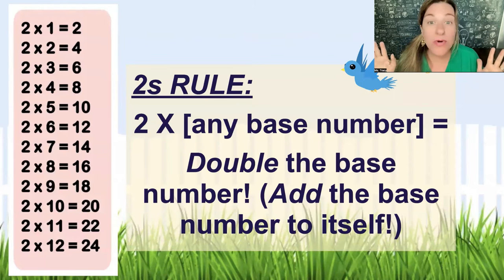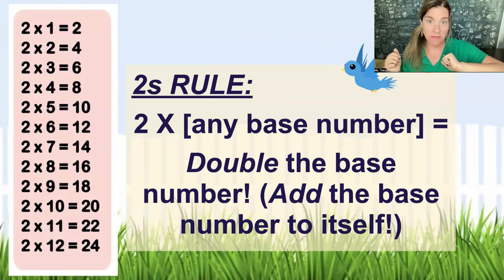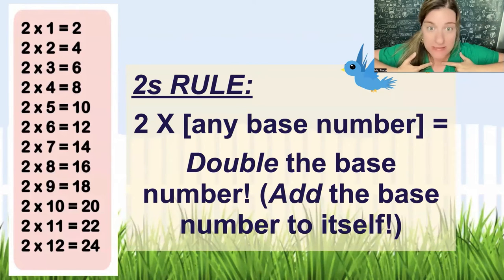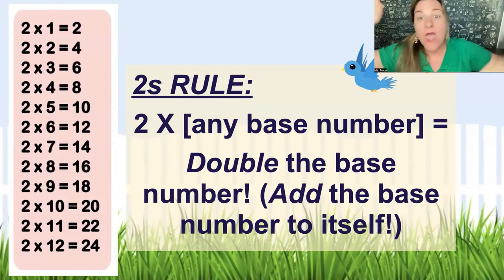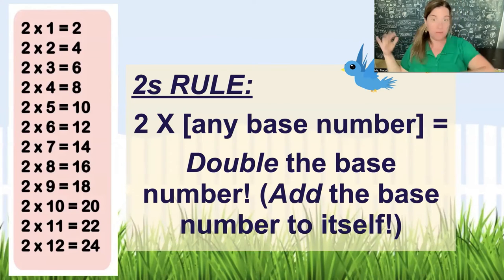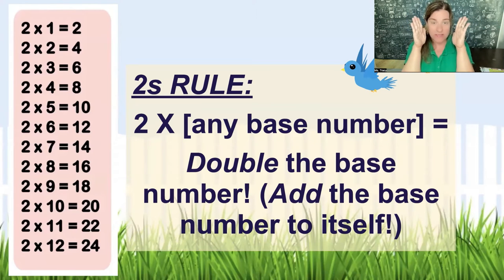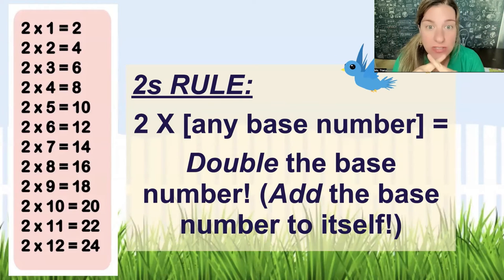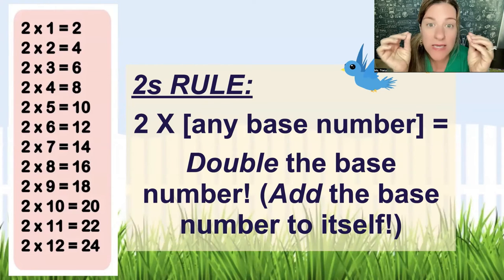Don't run away screaming. All we're going to do is look at what this is saying. If I get to a problem that is two times any base number, I can get the answer by doubling the base number — add the base number to itself. Do you agree that when you multiply a number times two, you are doubling it?